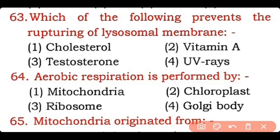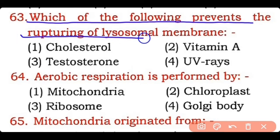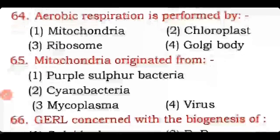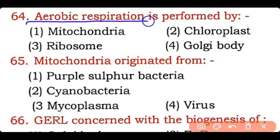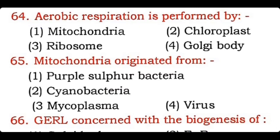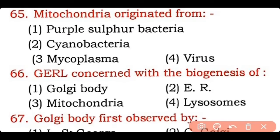Question 63: Which of the following prevents the rupturing of lysosomal membrane — cholesterol, vitamin A, testosterone, or ultraviolet rays? Correct answer is option one — cholesterol prevents the rupturing of lysosomal membrane. Question 64: Aerobic respiration is performed by — mitochondria, chloroplast, ribosome, or Golgi body? Correct answer is option one — aerobic respiration is carried out by mitochondria. Question 65: Mitochondria originated from — purple sulfur bacteria, cyanobacteria, mycoplasma, or virus? Correct answer is option one — from an evolutionary point of view, mitochondria originated from purple sulfur bacteria.